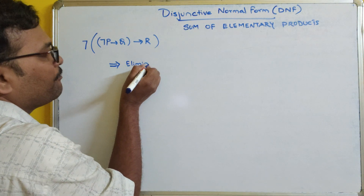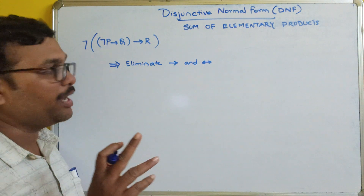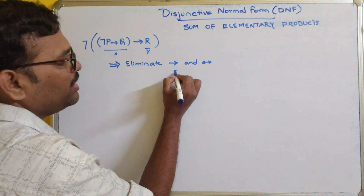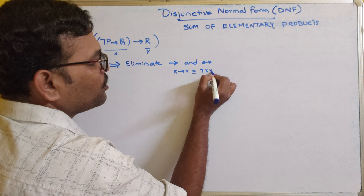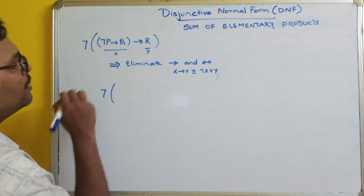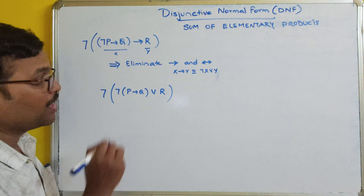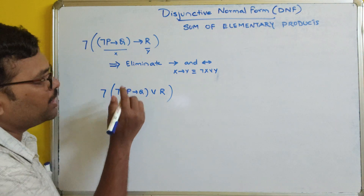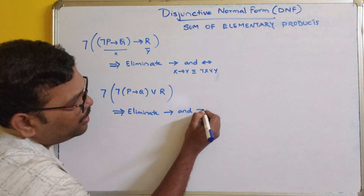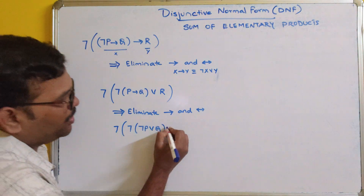First step: eliminate implies and double implies. In our formula we have an implication. Treat the left side as X and the right side as Y. We know that X implies Y can be written as negation X or Y. So this can be written as negation of (negation P or Q) or R. Now we still have one more implication, so we eliminate that too, giving us: negation of (negation of (negation P or Q) or R).